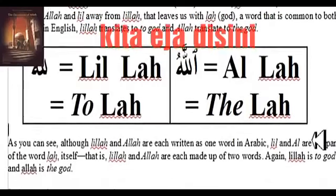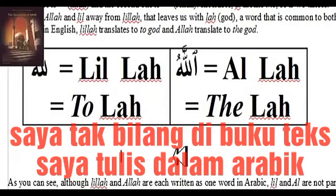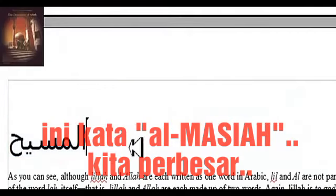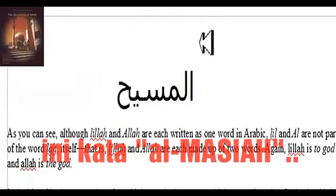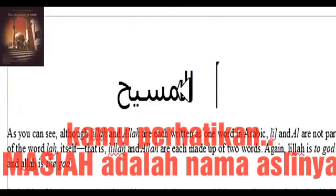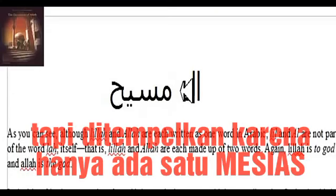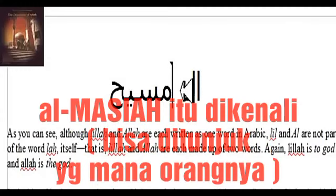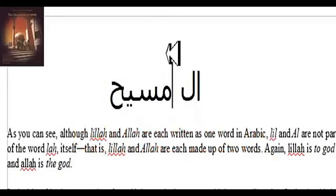The same applies when we write the word 'Al-Masih.' If you notice, 'Masih' is really the name, but 'Al' — this part — is not really part of the name. It's attached to it because there is only one Messiah. 'Masih' is unknown; 'Al-Masih' is the known one. So this is simply what it is — we put them together or take them off. It's exactly the same when it comes to the name of Allah.